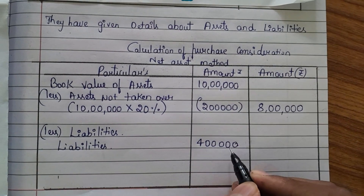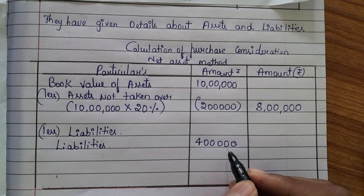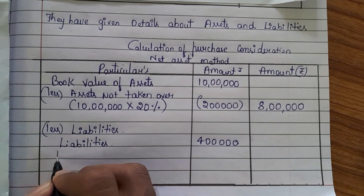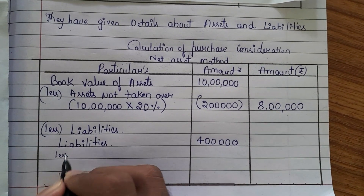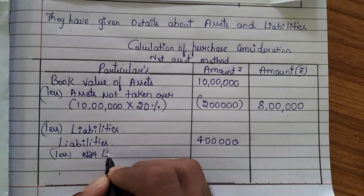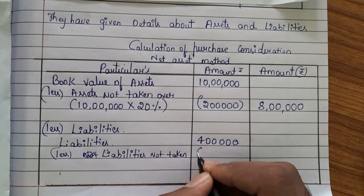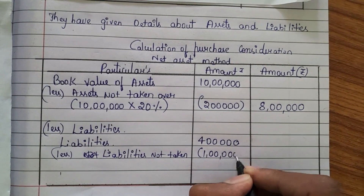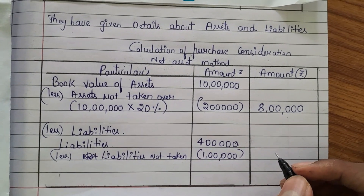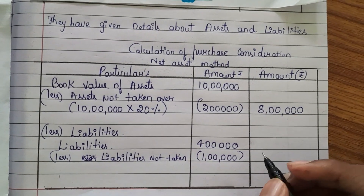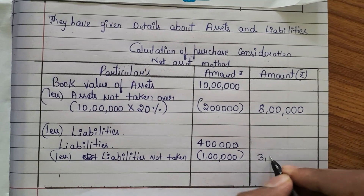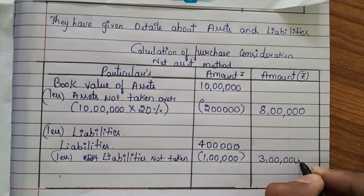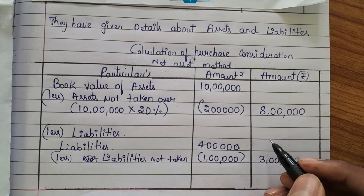Out of 4 lakh, 1 lakh rupees worth of liabilities was not taken over. Less liabilities not taken over — 1 lakh rupees worth of liabilities they are not taking. That means they are taking only 3 lakh of liabilities.